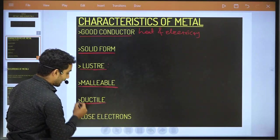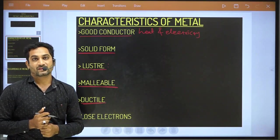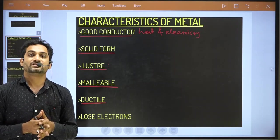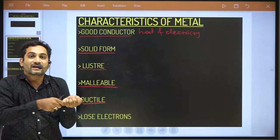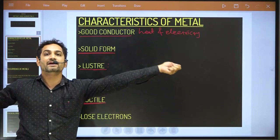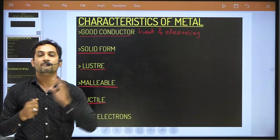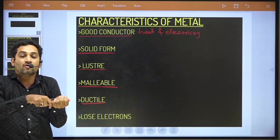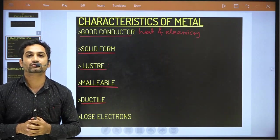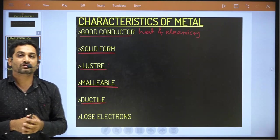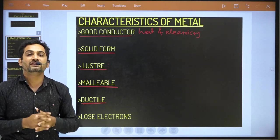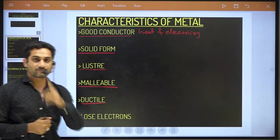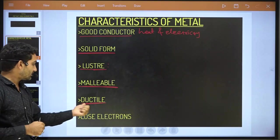Then ductility — ductility is the characteristic of metal in which we can draw a long wire from metal. The metal is modified through an extrusion process where molten metal is drawn to make a long wire. That property is known as ductile.